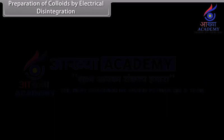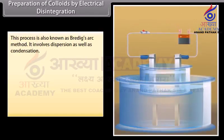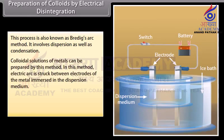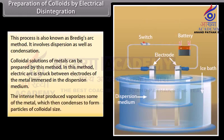Preparation of colloids by electrical disintegration (Bredig's arc method). This process involves both dispersion and condensation. Colloidal solutions of metals can be prepared by this method. An electric arc is struck between electrodes of the metal immersed in the dispersion medium. The intense heat produced vaporizes some of the metal, which then condenses to form particles of colloidal size.